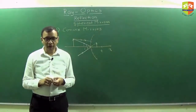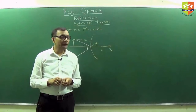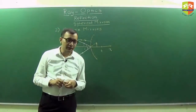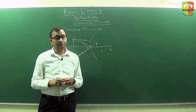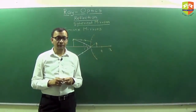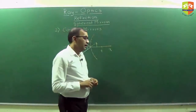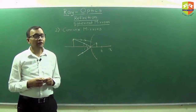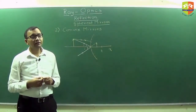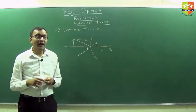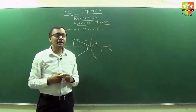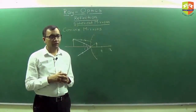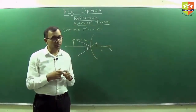One more thing you might have noticed: whenever a real image gets formed, this mirror will never form a real image. So whenever a real image gets formed, it is inverted. And if the image is put on a screen, it will be a real image, and if it is a real image, it must be a concave mirror.